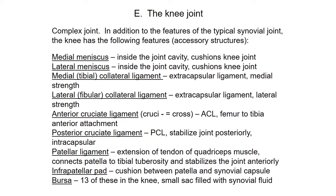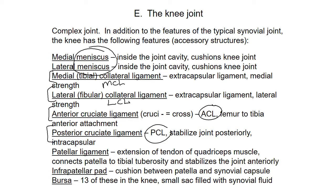In addition to the features of the typical synovial joint, the knee also has these features: it has meniscus, a medial collateral ligament (MCL), a lateral collateral ligament (LCL), an anterior cruciate ligament (ACL), a posterior cruciate ligament (PCL), a patellar ligament, an infrapatellar pad, and bursa — all other parts of the knee joint.